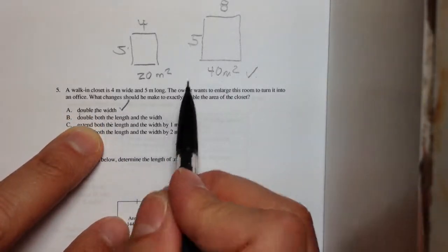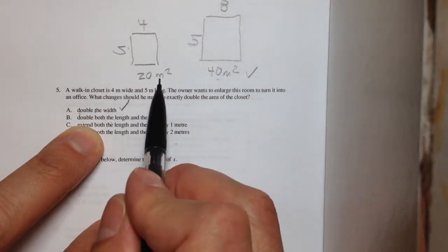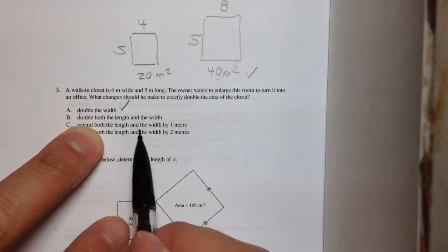But if I had doubled the length and the width, then you would have gotten 10 and 8, and that would have been 80 meters squared, and that's not double the area, that would be 4 times the area.